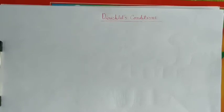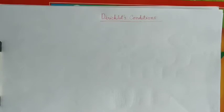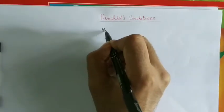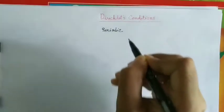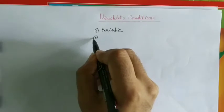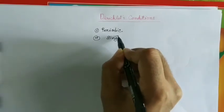Today we will try to understand what are the different conditions a function should satisfy for Fourier expansion. One condition is that the function should be periodic — that I have already told you. But in addition to that, what other conditions should be fulfilled by a periodic function if we want to expand it in terms of Fourier series? So the first point is: it should be periodic. The second point is that the function should be single-valued.